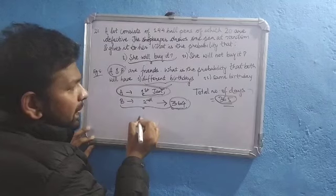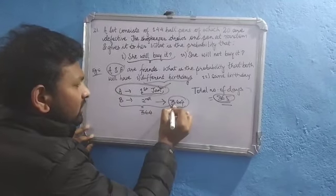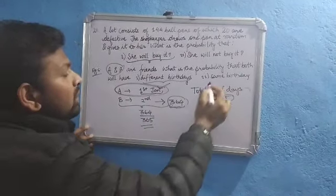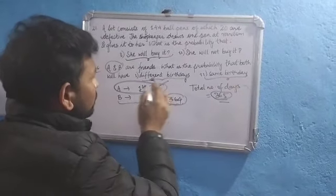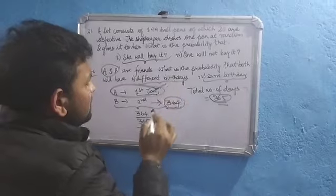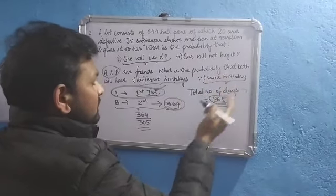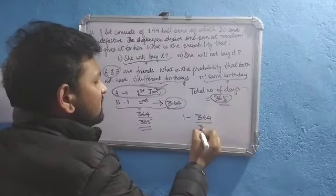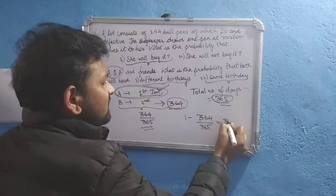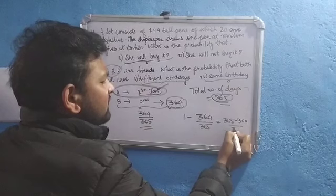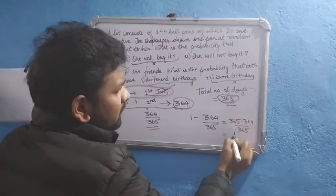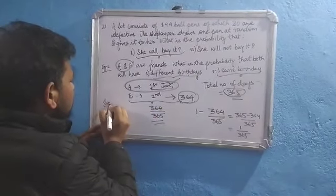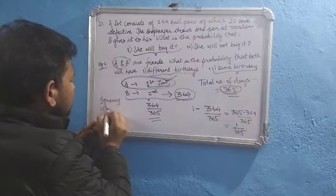Both having different birthdays: number of favorable outcomes is 364 divided by total possible outcomes 365. So the probability of different birthdays is 364 by 365. The probability of them being born on the same day will be 1 minus 364 by 365, which equals 365 minus 364 by 365, that is 1 by 365. Here we have ignored that this year might be a leap year.